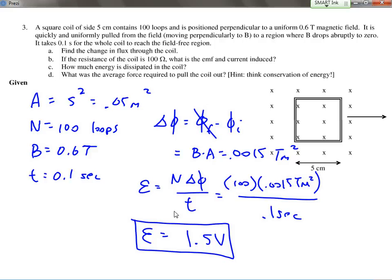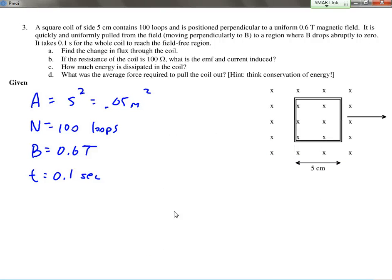Now, if I wanted to do part B and solve for the current also, so knowing now that my EMF is 1.5 volts, I can solve for the current using the formula V equals IR. So I is going to equal to the voltage divided by the resistance. So that ends up being 1.5 volts divided by the 100 ohms, and it ends up with 0.015 amps.